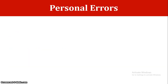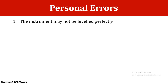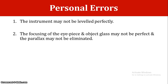The third category is personal errors. First, the instrument may not be leveled perfectly by the operator. Second, focusing of the eyepiece and objective lens may not be perfect, so parallax may not be eliminated. Parallax elimination is a key part of temporary adjustment. If not done, the crosshair position on the staff will vary and cause errors.